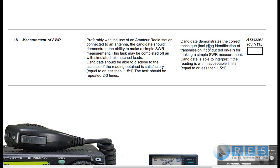The performance criteria on the right-hand column: the candidate demonstrates the correct technique including identification of transmission if conducted on-air for making simple SWR measurement. Candidate is able to interpret if the reading is within acceptable limits, that is, the SWR is 1.5 to 1 or less. Not a very hard competency this one.